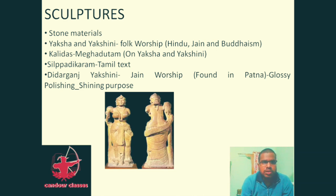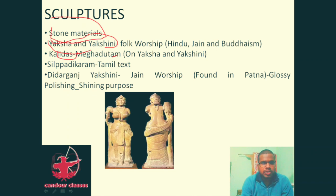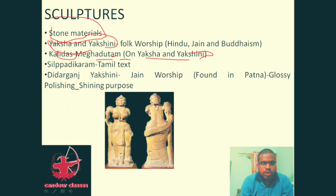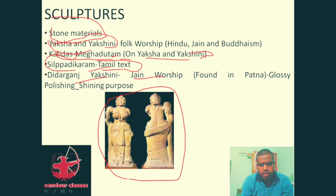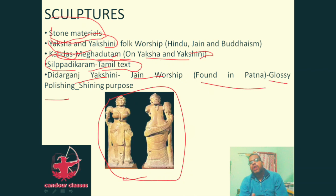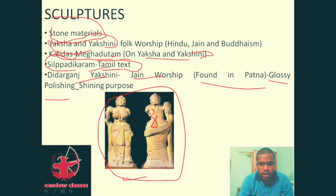Sculptures during this period were made from stone. The most notable are Yaksha and Yakshani sculptures, worshipped across Hinduism, Jainism, and Buddhism. The poet Kalidasa wrote the Meghadutam poem featuring a Yaksha. The Didarganj Yakshini, a Jain worship sculpture found in Patna, features distinctive glossy polishing for a shining finish seen on both sculptures and pillars.